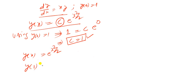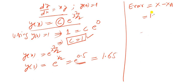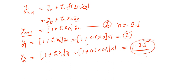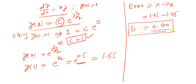Computing the value of y at x = 1: y(1) = e^(1/2) = e^0.5. With the calculator, this is 1.65. The error equals exact solution minus approximate solution: 1.65 - 1.25 = 0.40. This is the error in the solution of the given initial value problem using Euler's method.